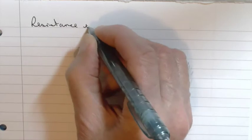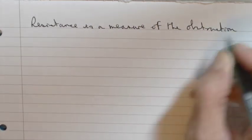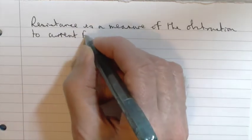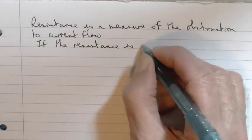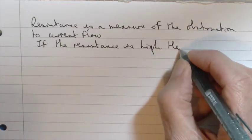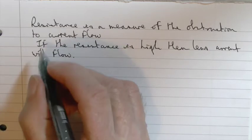The resistance of part of a circuit is the obstruction to current flow. If the resistance of part of a circuit is high, then it is difficult for the current to flow through. More energy is needed to push the current through and therefore the potential difference or voltage around that component will be higher.